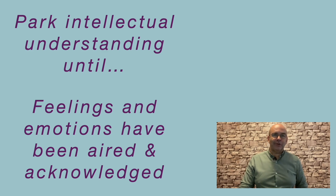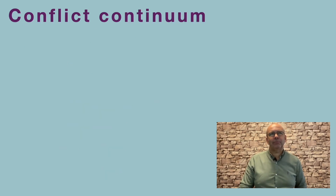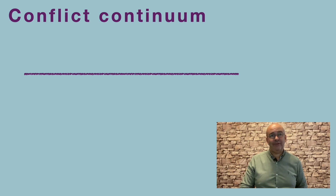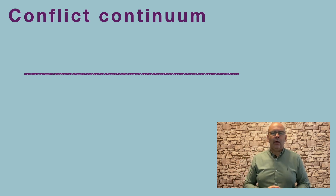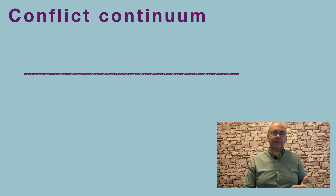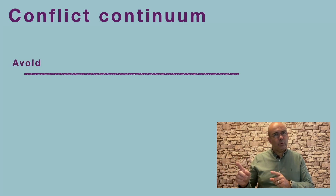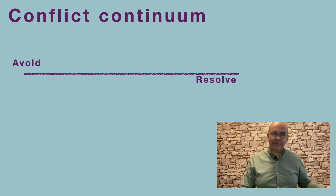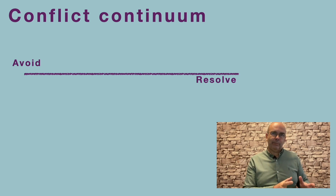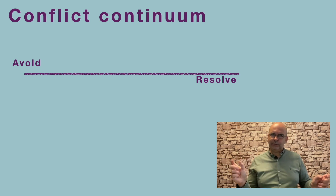I want to come on to another conflict continuum and explore the options we have in mediation and resolving conflict. At one end, we can just avoid conflict — that is one option. At the other end, we have the option to resolve that conflict. Ideally, we want to resolve conflict wherever possible, but is there a case for avoidance? And somewhere in the middle, we may need to focus on diffusing.